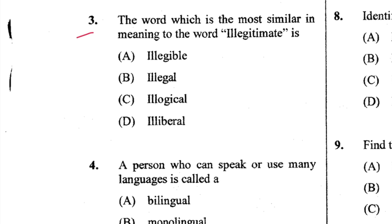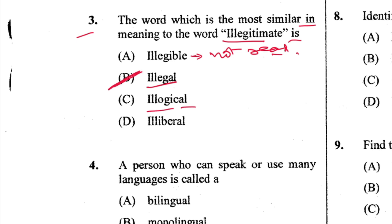Question 3: The word most similar in meaning to 'illegitimate' — 'eligible' means which cannot be read; 'illegal' is most similar to 'illegitimate.' B is the answer. 'Illogical' means without any logic; 'illiberal' means not liberal.